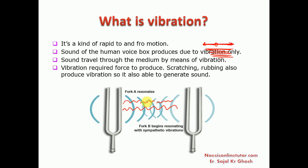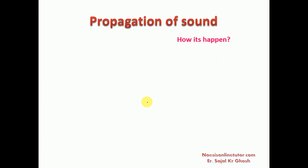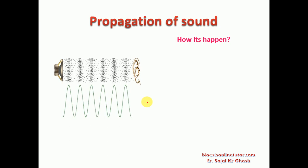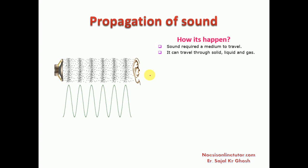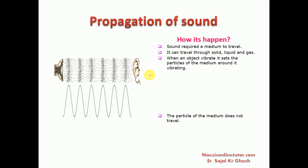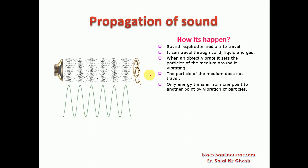Now, how does propagation of sound take place? Whenever a loudspeaker creates sound, that sound reaches our ears and by means of our ear mechanism we can hear it. Sound requires a medium to travel - air is the medium. It can travel through solids, liquids, and gases. When an object vibrates it sets the particles of the medium around it into vibration.